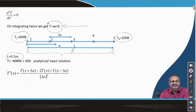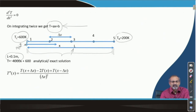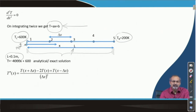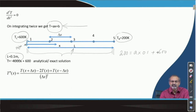Imposing the boundary conditions: T = 600 at x = 0 (taking the left end as the origin), B takes the value of 600. Then imposing T = 200 Kelvin at x = 0.1 meter, you have 200 = A × 0.1 + 600, which gives A = −4000. Therefore, you have the analytical or exact solution available. This is good because you will then know how well your finite difference solution performs when you apply FDM to this problem.